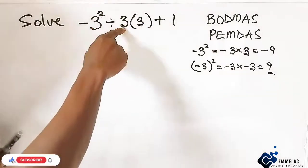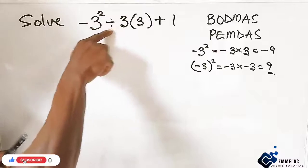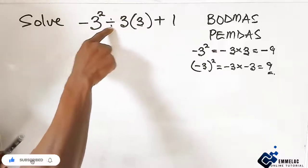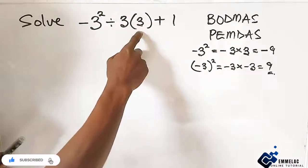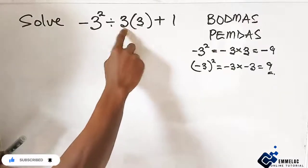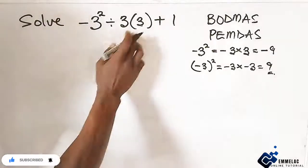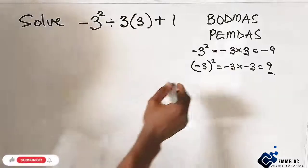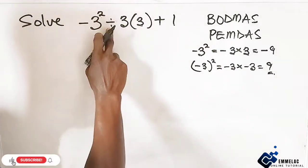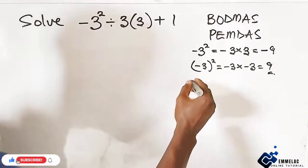But in this case here, this 3 is having a divisional sign. And because it's having a divisional sign, you cannot multiply both these two numbers together. Now the only case whereby you can multiply this together is when the sign here is either plus or minus.